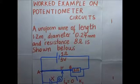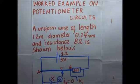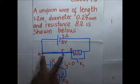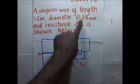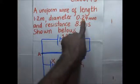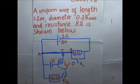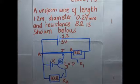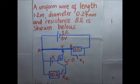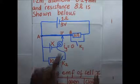Today we will examine this worked example. In a potentiometer circuit, we have a uniform length of wire AB that is 1.2 meters long, has a diameter of 0.4 millimeters, and its resistance is 8 ohms. We are required to find the EMF of cell X according to this question.